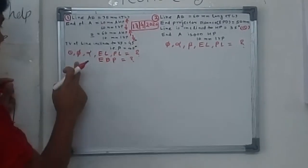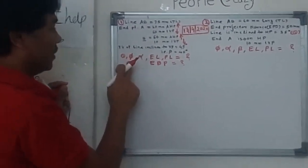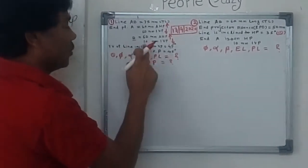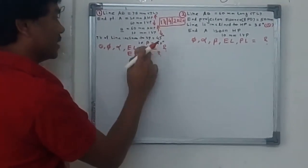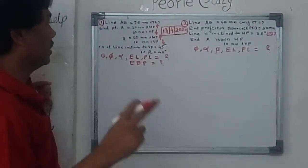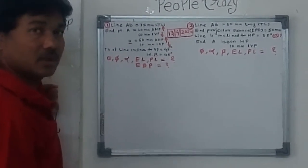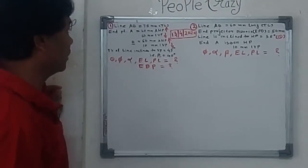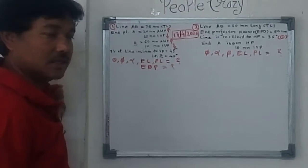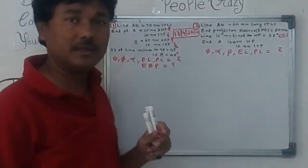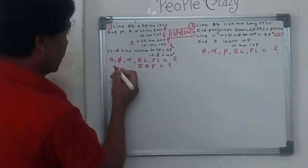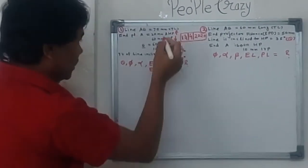Apart from theta and alpha, since the top view or plan of the line is inclined, this angle is nothing but beta — so beta is given. The endpoint conditions have been given with respect to HP and VP. Line AB is 75 mm long, which indicates the true length of the line. The following things are unknown and we will try to solve this problem.